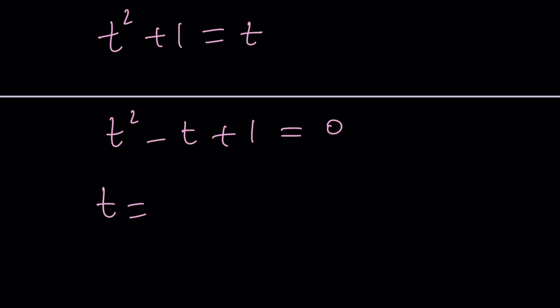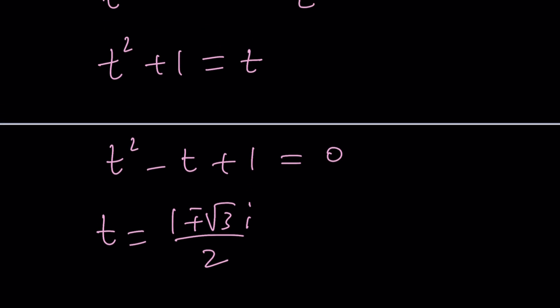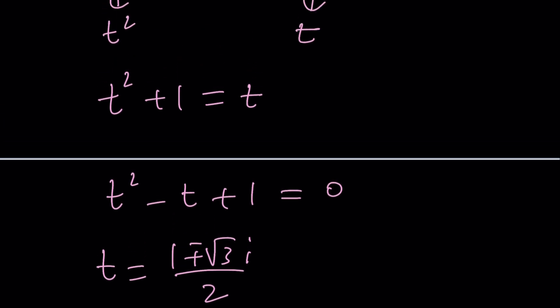You can easily find by the quadratic formula 1 plus minus the square root of 3i over 2, which are cube roots of negative 1. But negative 1 is excluded. Only two of them. And there's three of them.